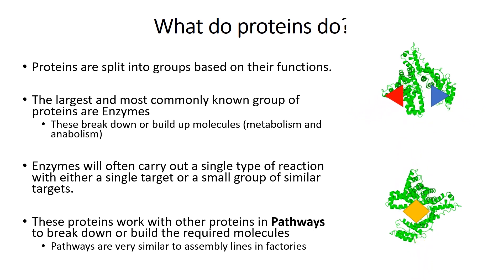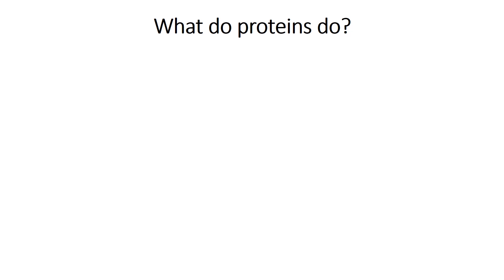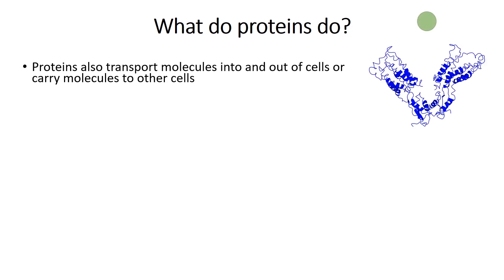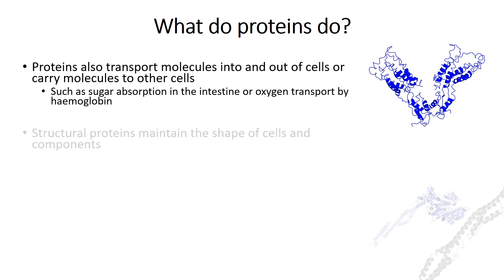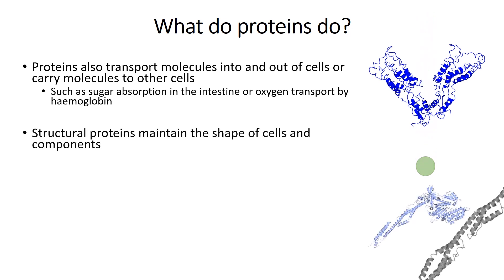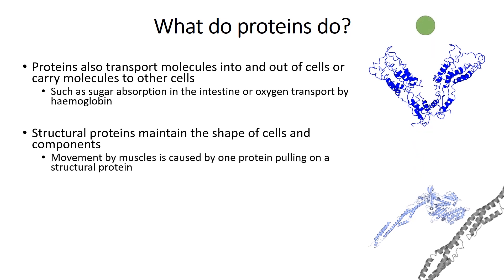Other groups of proteins include transport proteins that transport molecules in and out of cells, or even to cells in distant parts of the organism. Examples of this can include sugar resorption from our diet into our cells for use as an energy source, or for the transport of oxygen from our lungs to our entire bodies by the hemoglobin proteins in our red blood cells. Structural proteins maintain the specific shapes that some cells need, whilst also being pulled by other proteins to cause the movement that our muscles are used for, with a basic example being shown in the bottom right corner of the screen.